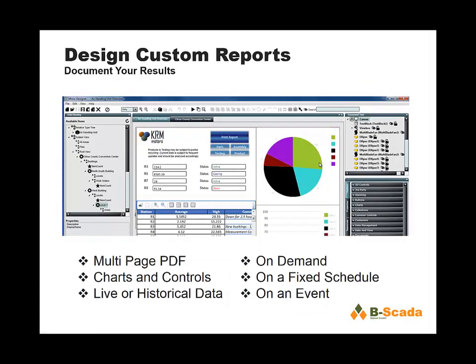The Mimic Designer can also be used for creating reports. Maybe you would like to generate a multi-page PDF document with a title page and several pages giving you information on your system. Any screen you design in the Mimic Designer can also be used as a page within that multi-page PDF document. Screens can show real-time data or historical data and statistical information like averages. Those reports can be generated on demand, on a fixed schedule — for example, every day at midnight emailed to management — or generated on an event, such as when a value goes out of range.